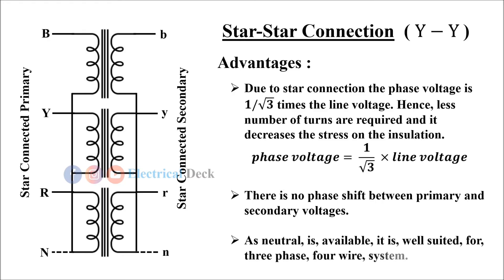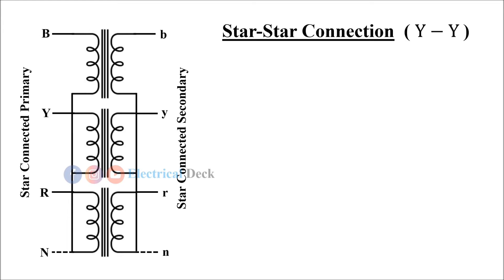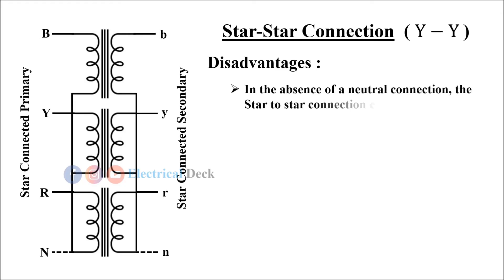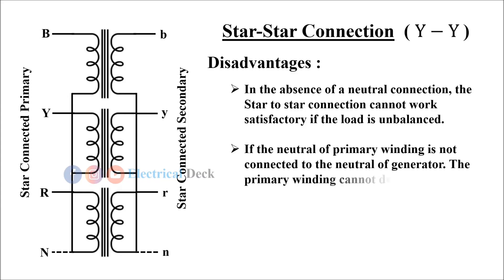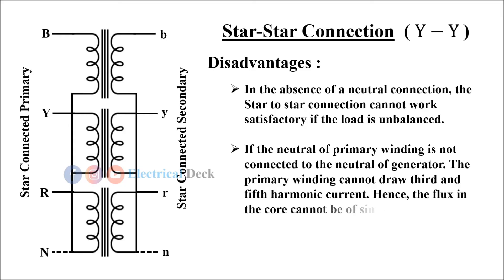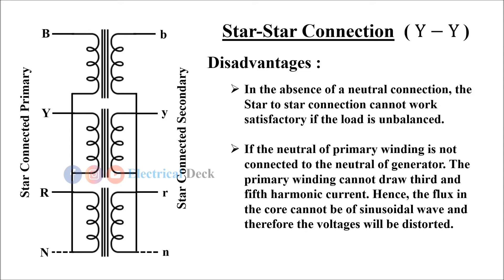But the disadvantages with this type of connection are: in the absence of a neutral connection, the star-to-star connection cannot work satisfactorily if the load is unbalanced. If the neutral of the primary winding is not connected to the neutral of the generator, the primary winding cannot draw third and fifth harmonic current, hence the flux in the core cannot be of sinusoidal wave and therefore the voltages will be distorted.